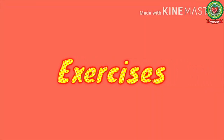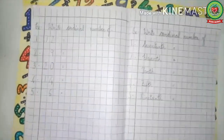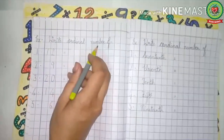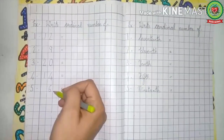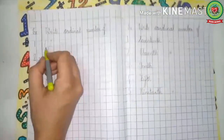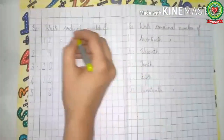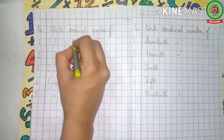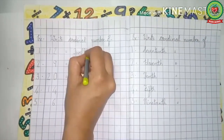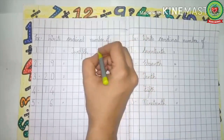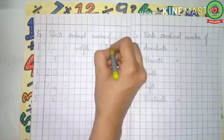Now let us do exercises for ordinal numbers. We will read the exercise first: write the ordinal number of the given cardinal numbers. Number 1 is 12 — the ordinal number of 12 is 12th. Spell it: T-W-E-L-F-T-H. The short form is 12 and add TH. Next is 9, and the ordinal number of 9 is 9th: N-I-N-T-H. The short form is 9 and add TH.